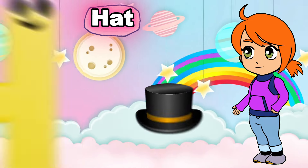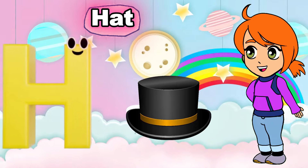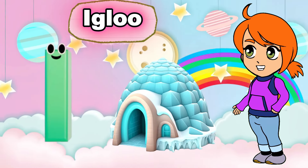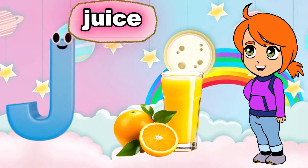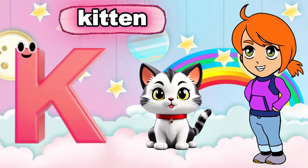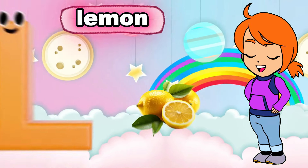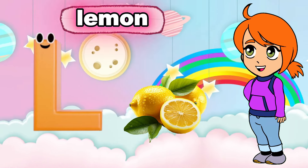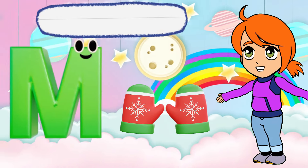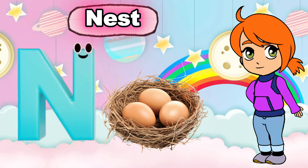G is for Guitar. g-g-g-Guitar. H is for Hat. ha-ha-Hat. I is for Igloo. e-e-e-Igloo. J is for Juice. j-j-j-Juice. K is for Kitten. k-k-k-Kitten. L is for Lemon. l-le-Lemon. M is for Mittens. m-m-m-Mittens.